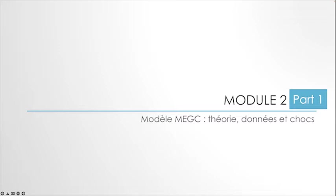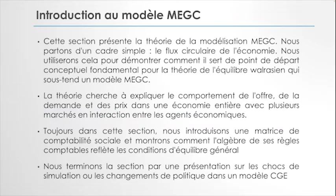Aujourd'hui, dans notre cours, nous avons continué la suite. Elle consiste à pouvoir présenter un cas concret de ces modèles au niveau de la modélisation d'équilibre général calculable. Nous allons essayer de présenter la théorie qui se cache derrière ces modèles, en partant d'un cadre simple, c'est-à-dire le flux circulaire d'une économie, qui sert de départ conceptuel fondamental, notre benchmark pour la théorie d'équilibre walrasien, qui sont les fondements de ces modèles.